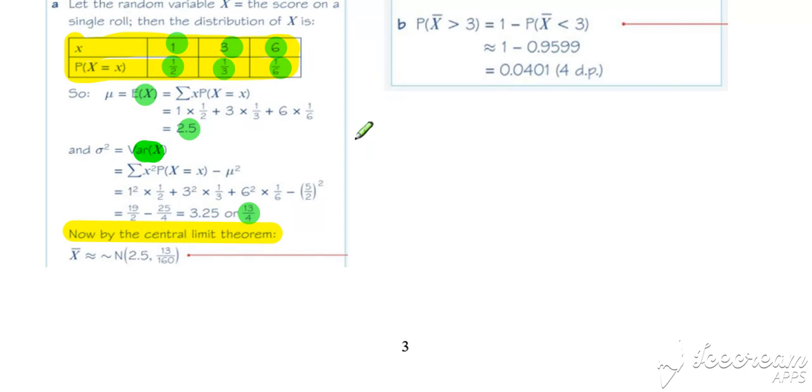So we've got a large enough sample size. We've got a discrete random variable for x, but under the central limit theorem, because we are considering the distribution of x bar, it will have the same mean. It will have a variance reduced by the sample size, so we divide through by 40, and because the sample size is large enough, x bar will approximate to a normal distribution.